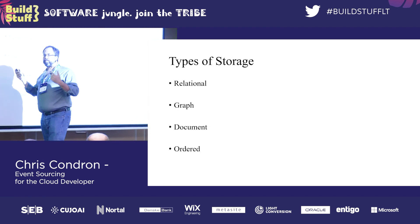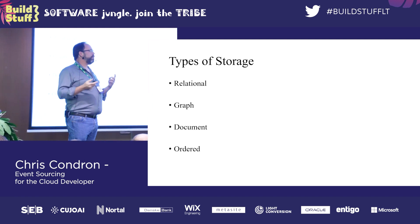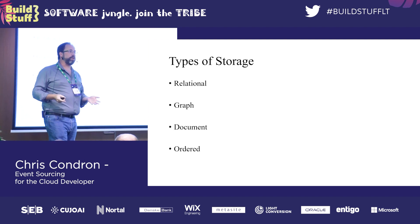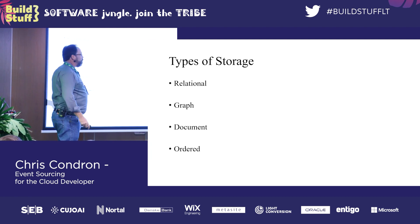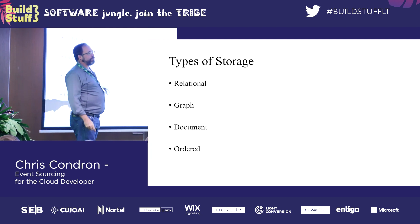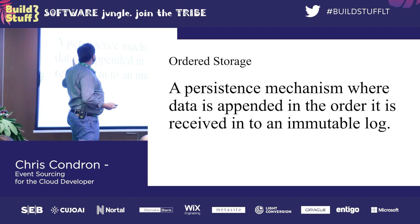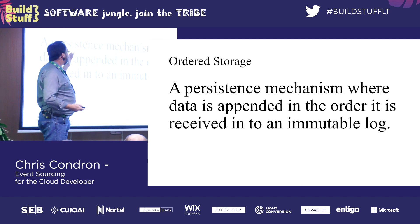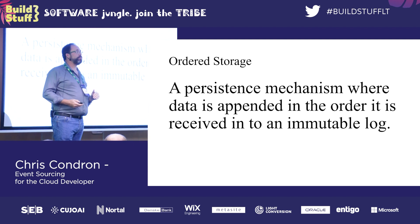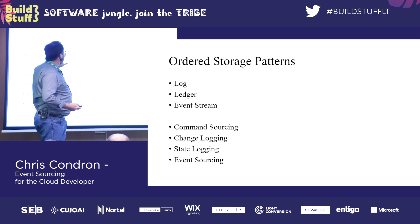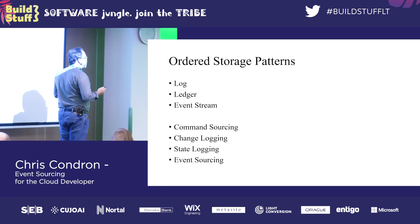So if we think about our problem, we're really missing a top-level decision about storage. Relational storage, graph storage, document, ordered storage — all of these things are types of ordered storage. It's a persistence mechanism where you append data in the order it's received in an immutable log. And it gives rise to allowing us to talk about the different patterns.